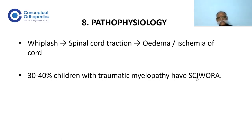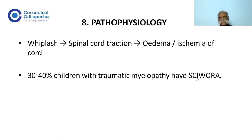The pathophysiology involves whiplash with flexion-extension giving rise to spinal cord traction, which results in edema and may precipitate ischemia of the cord. Thirty to 40% of children with traumatic myelopathy have SCIWORA.